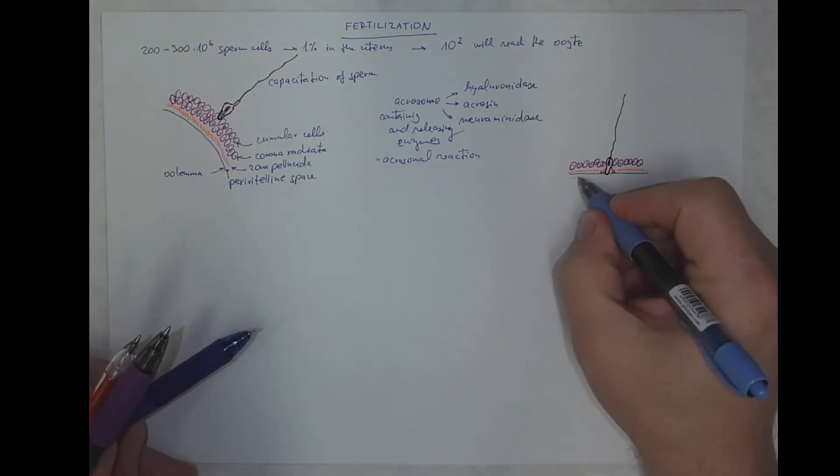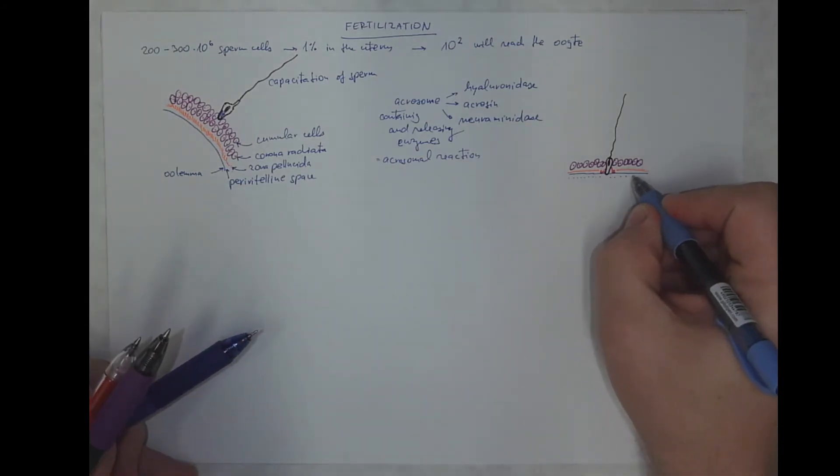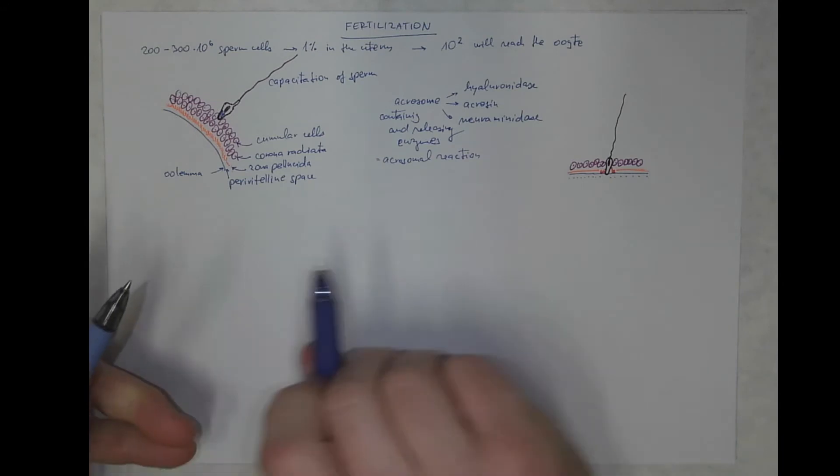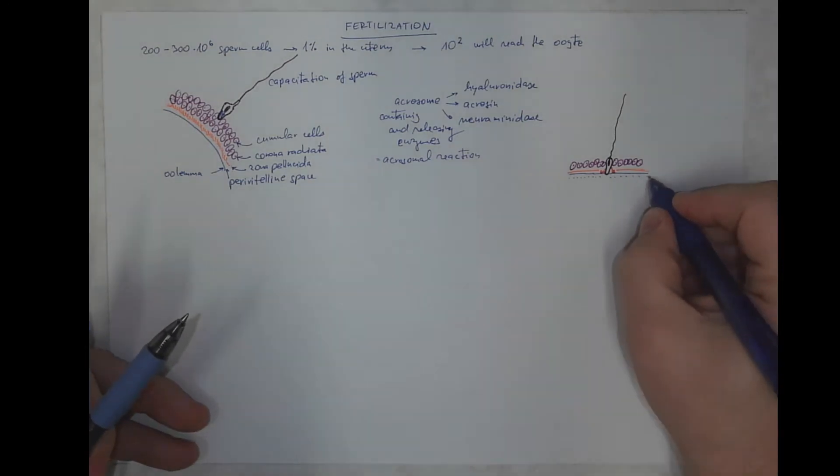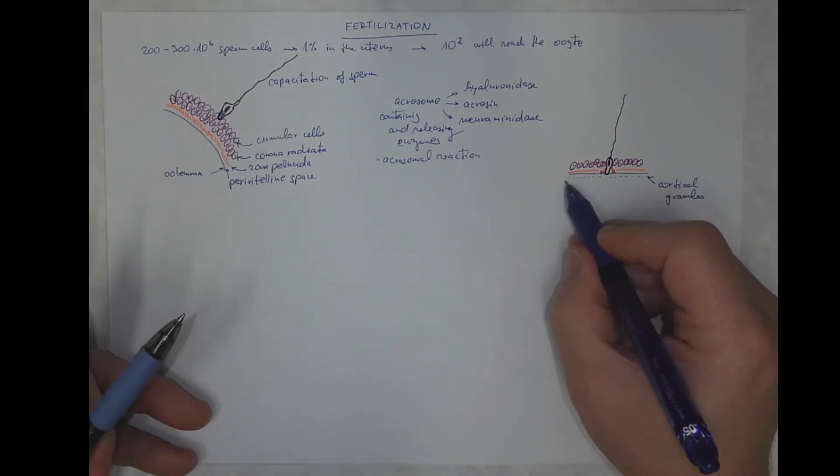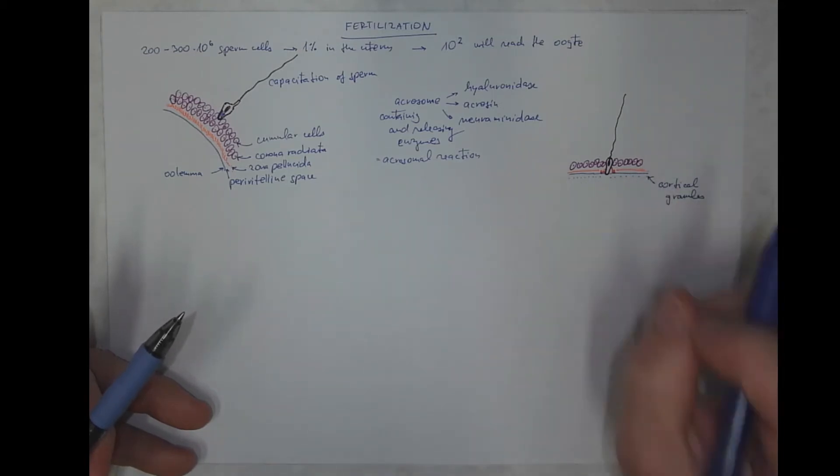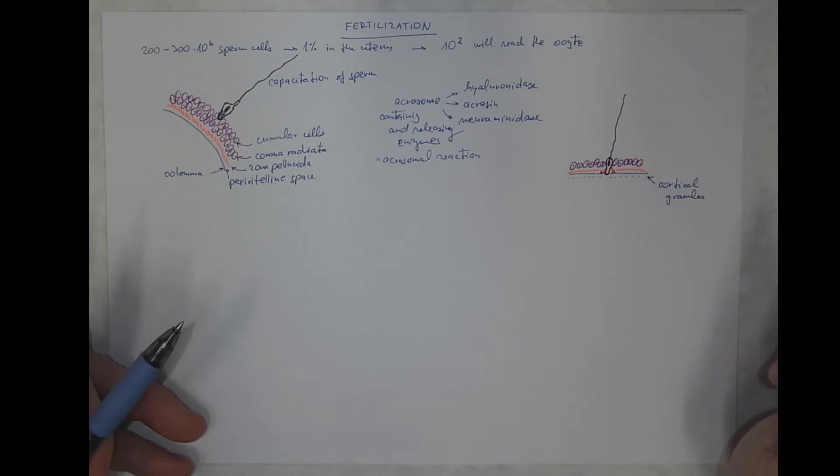In the surface layer of the cytoplasm of the oocyte, we got cortical granules. Cortical granules because they are in the cortex of the cytoplasm in the most peripheral part.